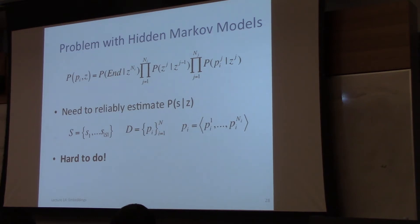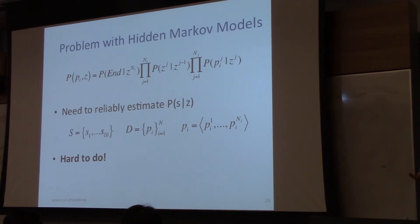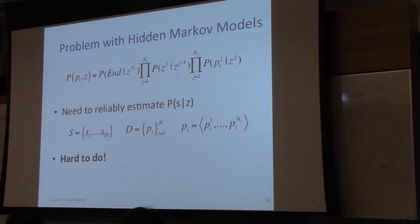The problem with hidden Markov models is that this form posits the existence of a factorization approach — it posits that the sequence should be factorized in this way, with some latent states. We need to reliably estimate these parameters, which is hard to do. The latent states are like labels.